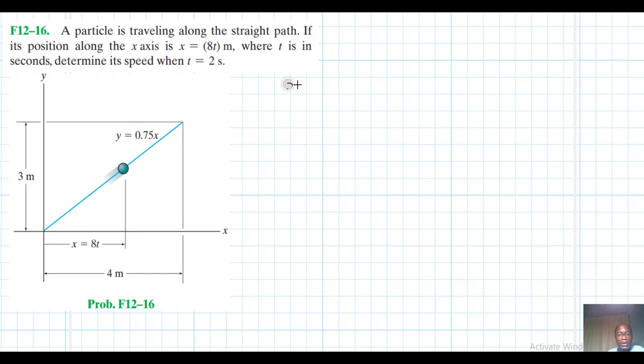So let's start. So our x is equal to 8t. And therefore, x dot, which is equal to dx dt, which is equal to vx, is equal to 8. So in the x direction, the velocity is equal to 8. And this is constant.